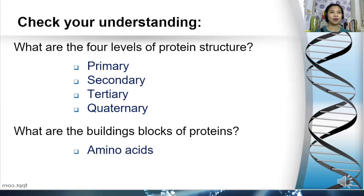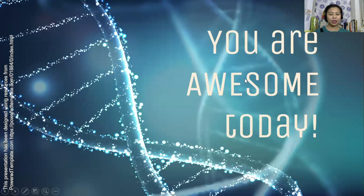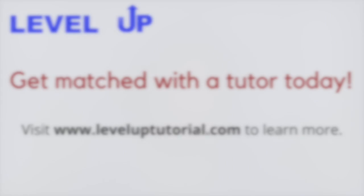To check your understanding: what are the four levels of protein structure? We have the primary, secondary, tertiary, and quaternary. And what are the building blocks of proteins? We have the amino acids. That's it for today, and I hope to see you again next time. Thank you. Bye.